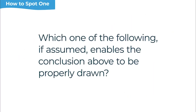So how do you spot a sufficient assumption question? You're looking for language in the question stem that tells you the answer choice is going to guarantee that the conclusion in the argument follows. We're looking for words that indicate sufficiency and words that indicate an assumption. For example, if the stem says the answer choice 'enables the conclusion above to be properly drawn,' that word 'enables' tells us it's a sufficient assumption question.